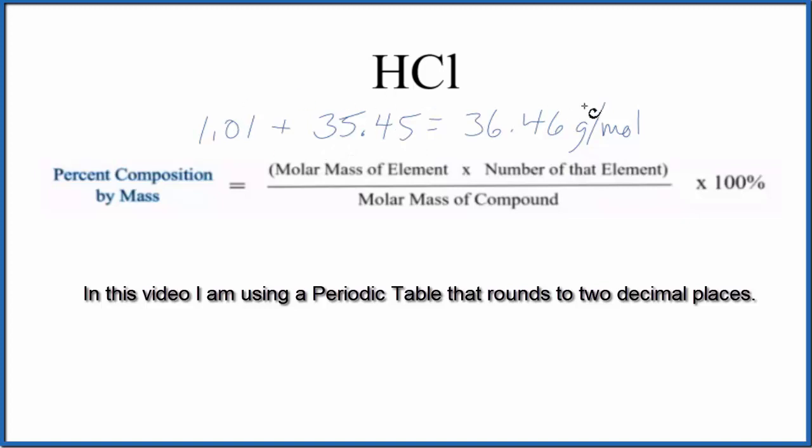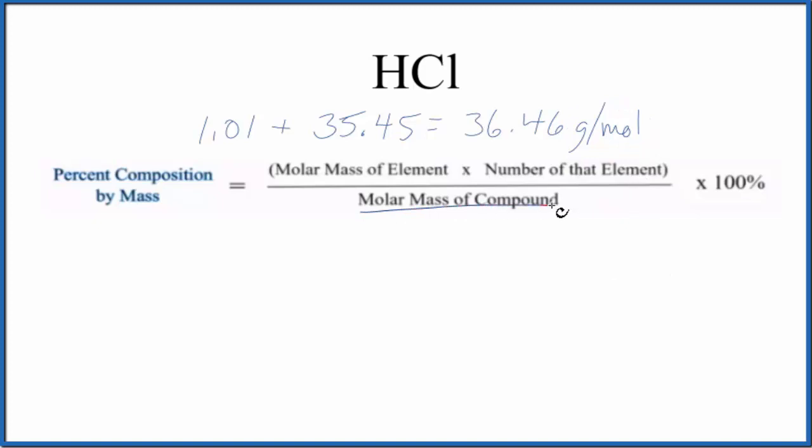We add them together and get 36.46 grams per mole, the molar mass for the compound. Now we'll do each element and multiply it by the number of that element.